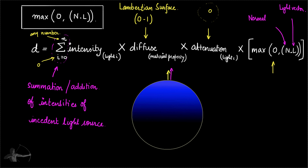And that is it for this chapter. In the next chapter we will take our normal shader, add the diffuse reflection property to it, and see the surfaces emitting diffuse reflection. Thank you so much for listening.